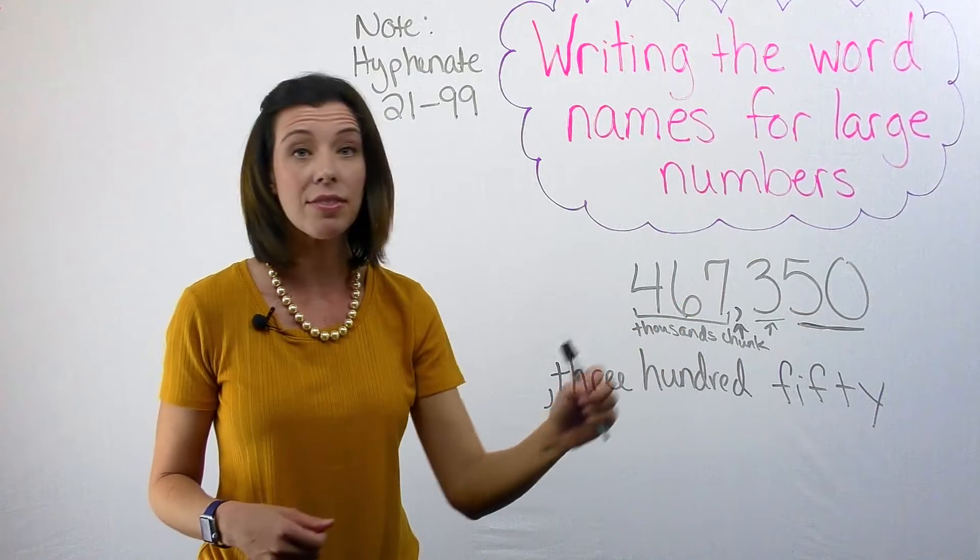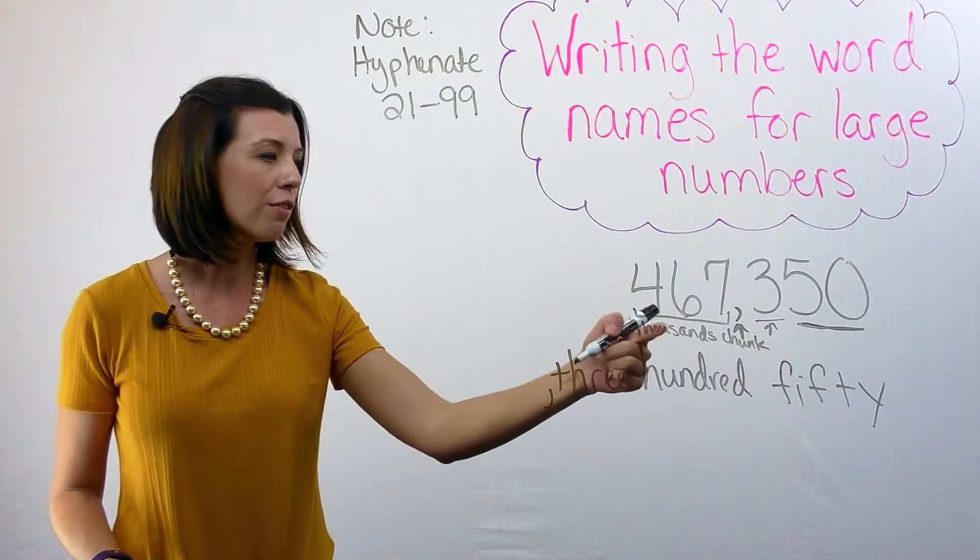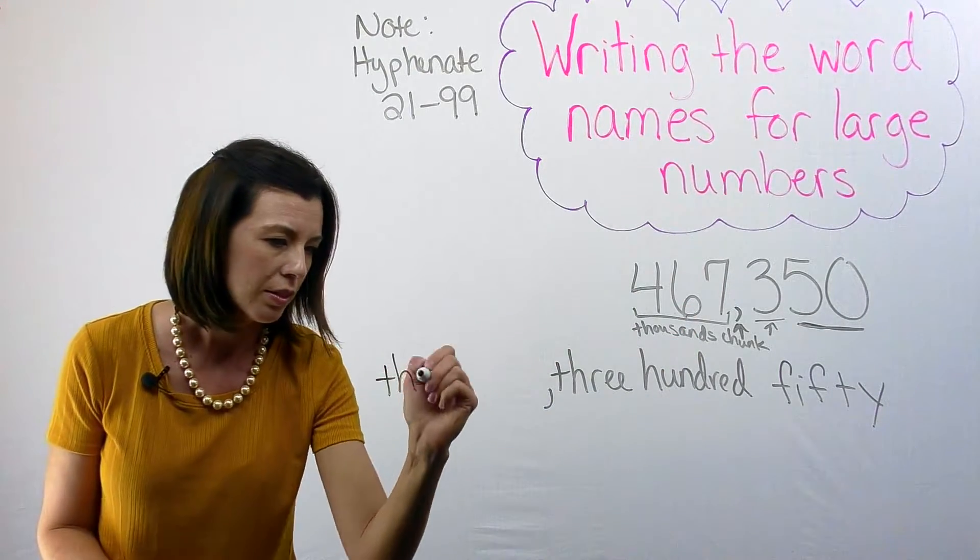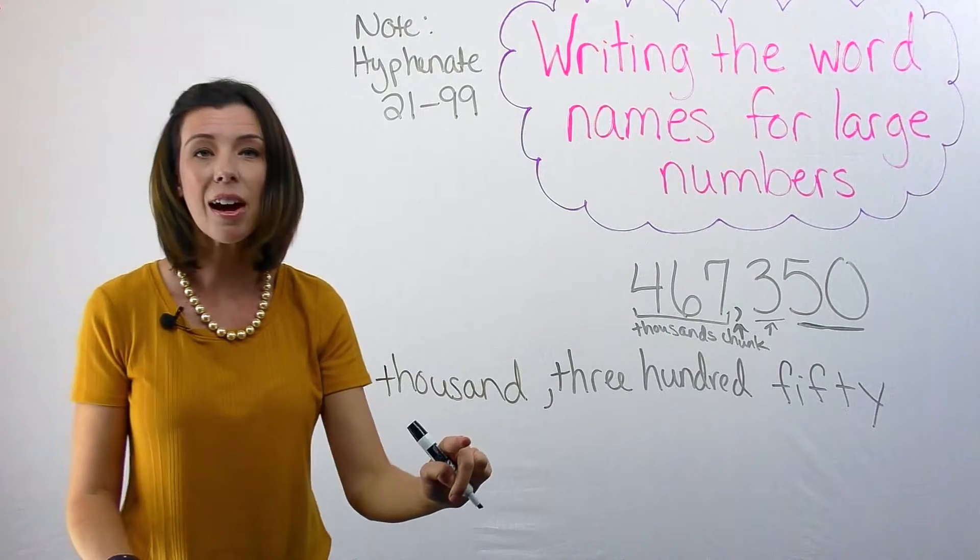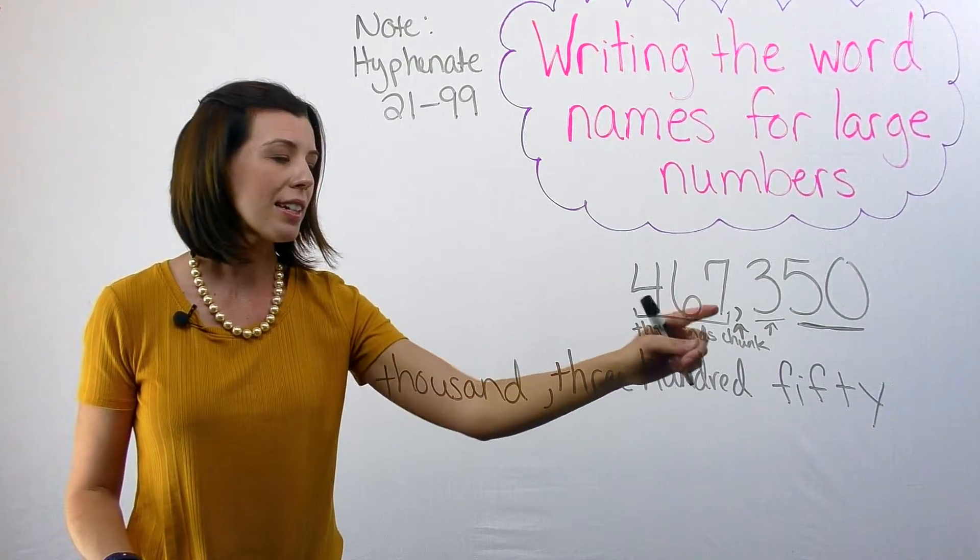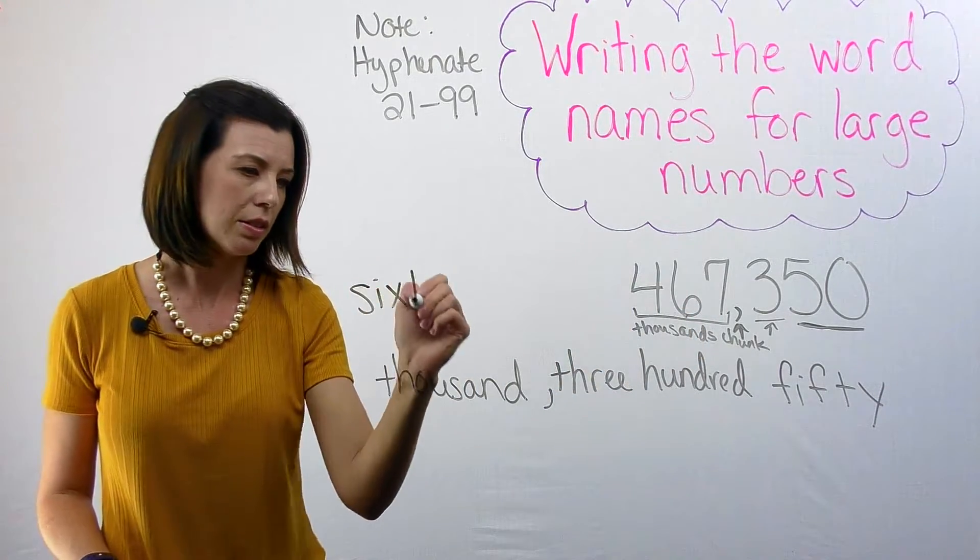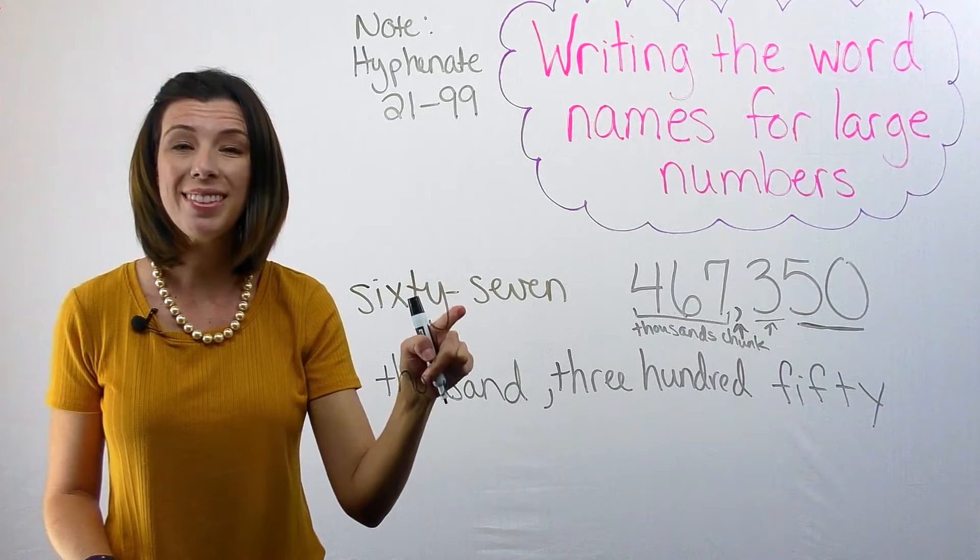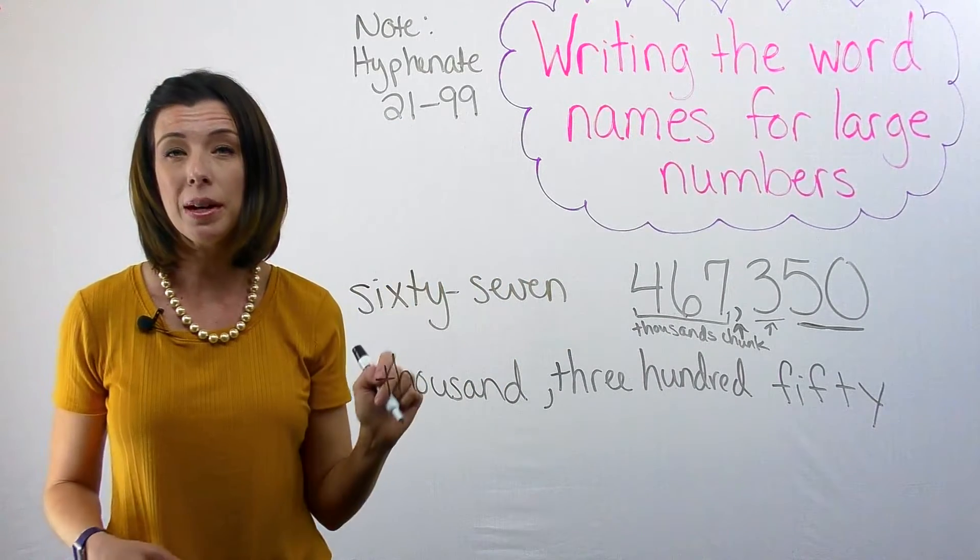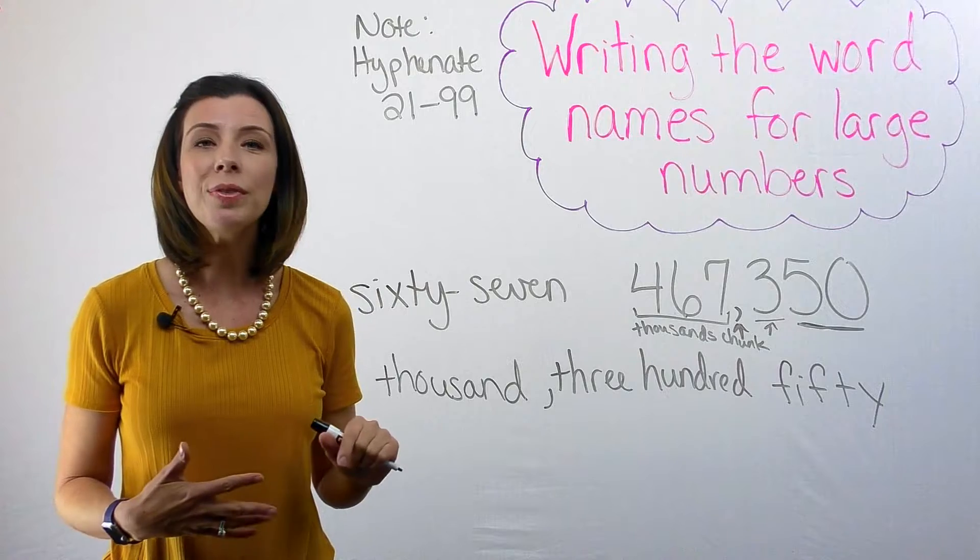So again, I see I have a 67. So let me go ahead and first add my thousand. So there's my thousand label. I know I've got a 67 here. Now remember, I'm putting that hyphen in, because again, I'm between the numbers 21 and 99.